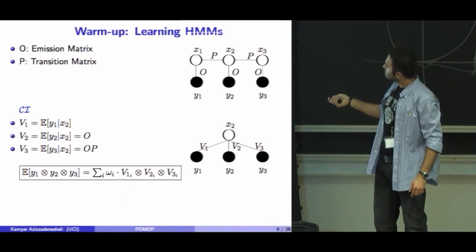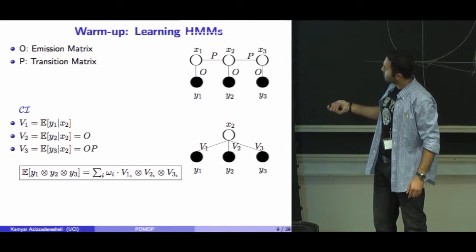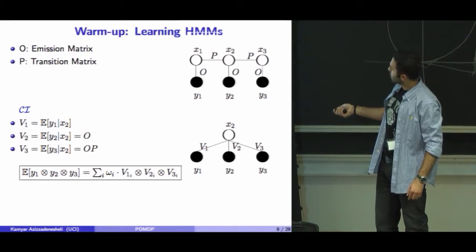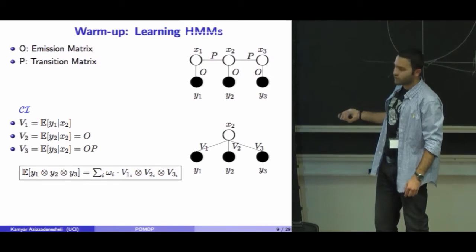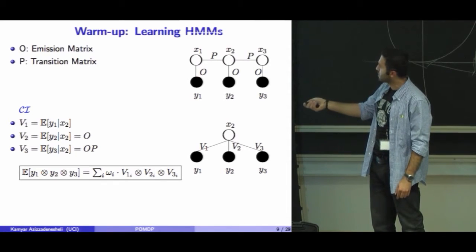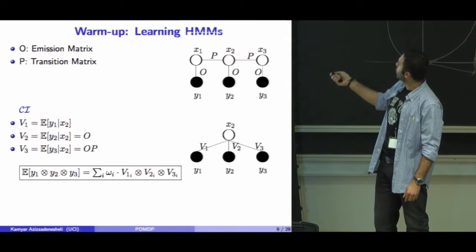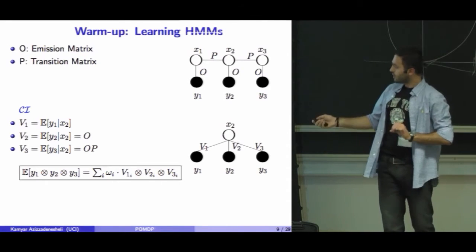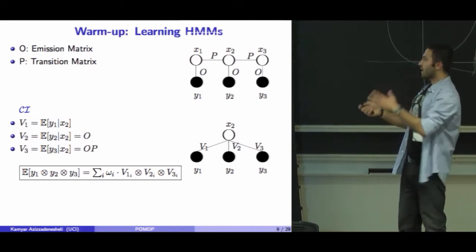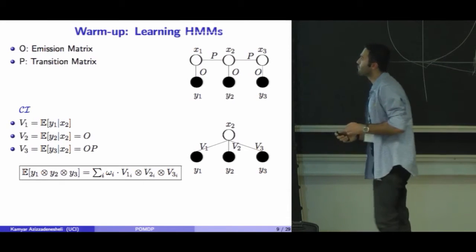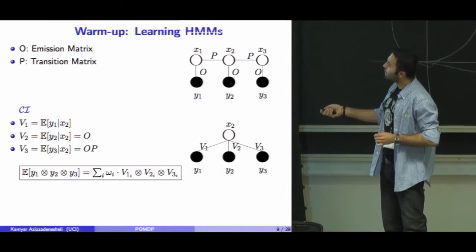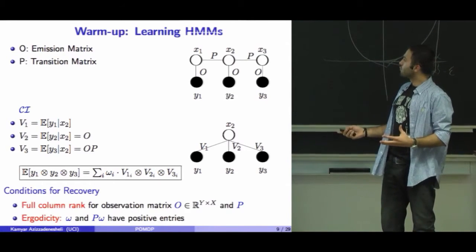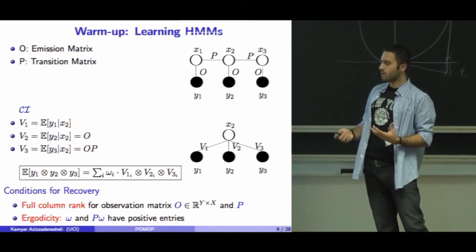We define V1 as the distribution over Y1 given X2, V2 as the distribution over Y2 given X2 — which is exactly O — and V3 involves transitioning from the current state to the next and generating O times P. It is well-studied that if we form this moment tensor and decompose it, doing some mathematical manipulations, we can recover O and OP and from that the transition matrix. We are going to use this same idea to learn the POMDP model.